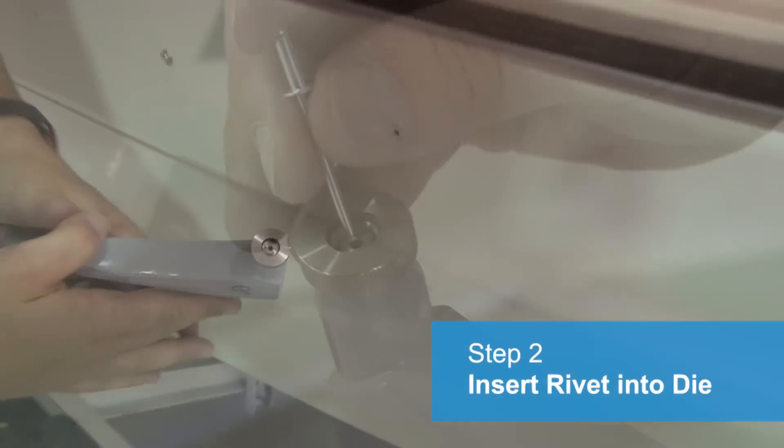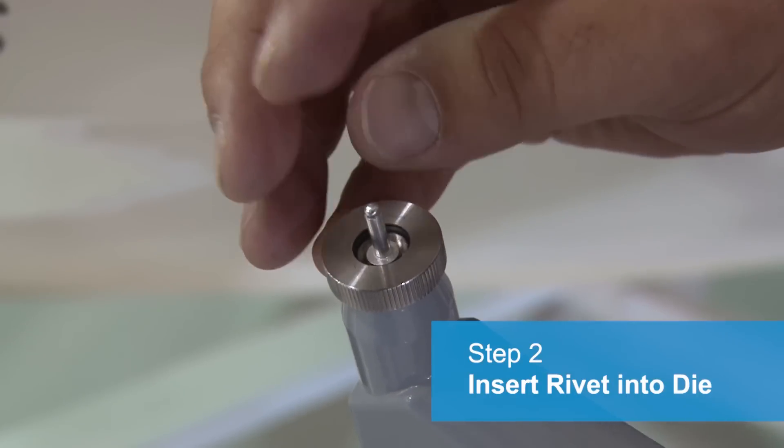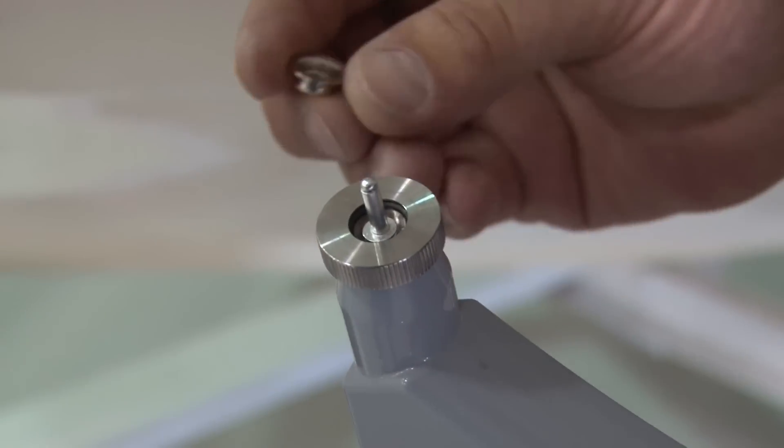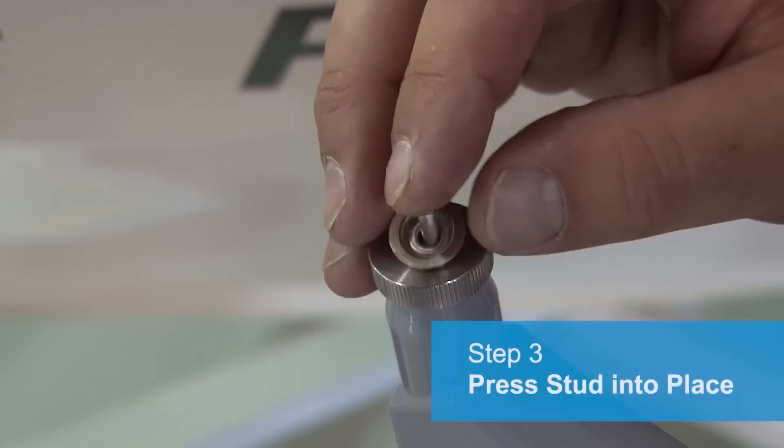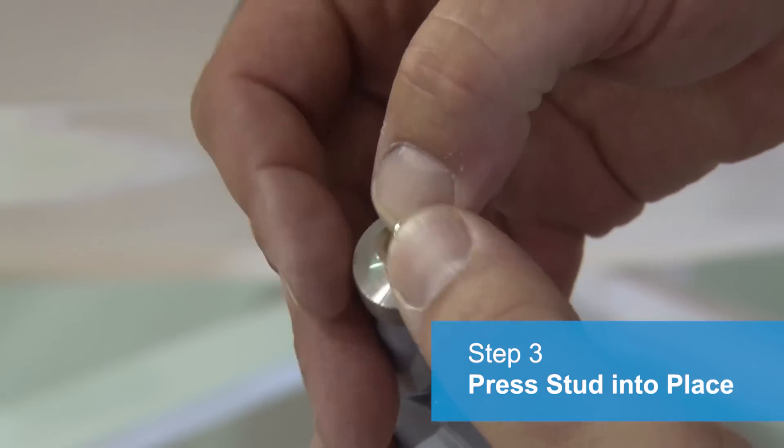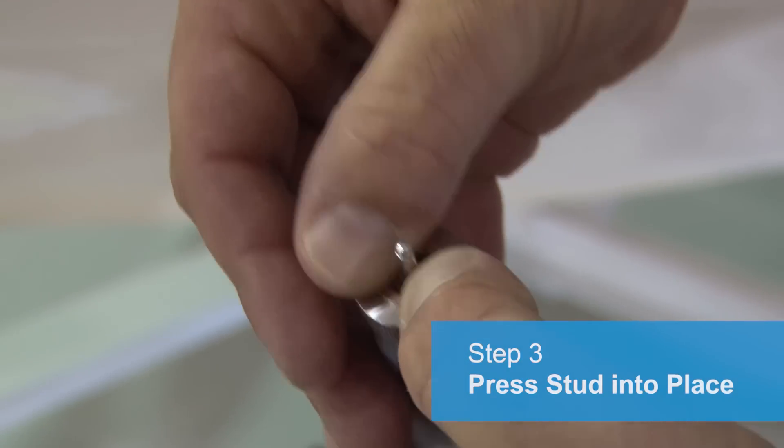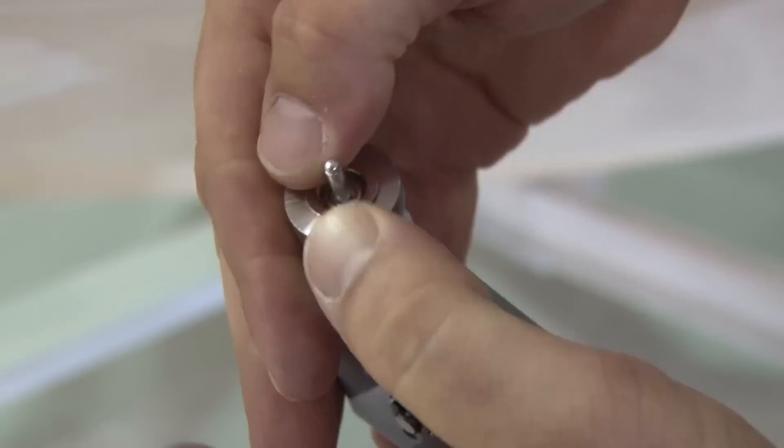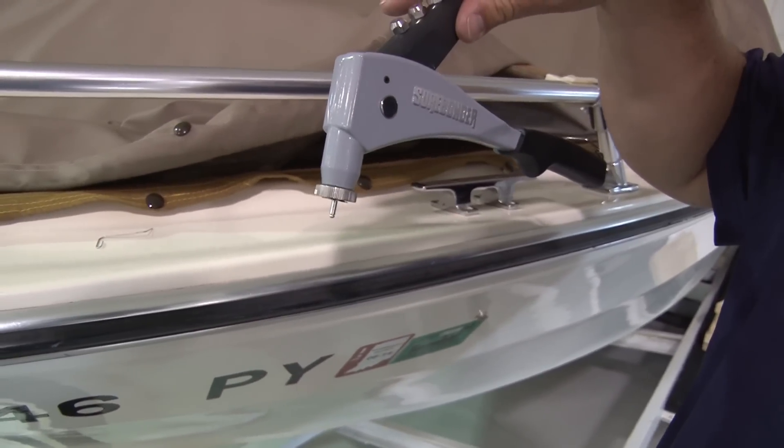Step 2: Insert a blind pop rivet into the die. Step 3: Press the stud into place inside the die. There's a rubber O-ring that helps to prevent the stud from falling out, so you can turn the tool any direction and shake it, and that stud will stay in place.